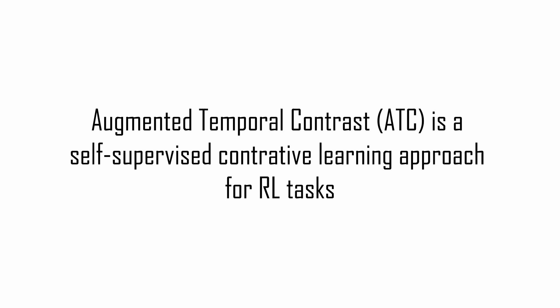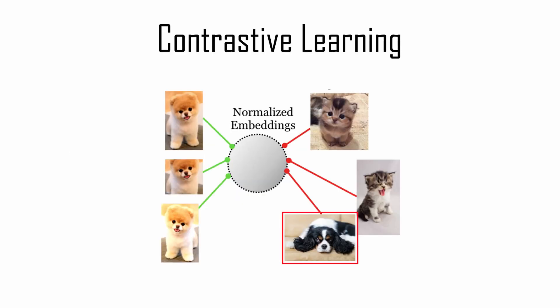The idea behind contrastive learning and ATC is to learn an encoder, which brings near in the latent space embeddings of the same image, which is applied at different augmentation technique, but repels the embedding of different images.